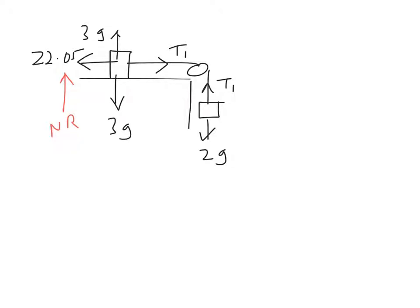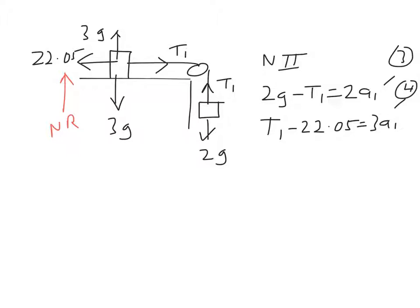So we can do the same thing as before using Newton's second law. For the particle, 2g minus t1 equals 2a1. It's not the same as before, I'll call it a1. And t1 minus 22.05 is 3a1. So add those equations together, call that 3 and 4. So 3 plus 4, we get 2g minus 22.05, that's minus 2.45, equals 5a1. So a1 is minus 2.45 divided by 5, that's minus 0.49.